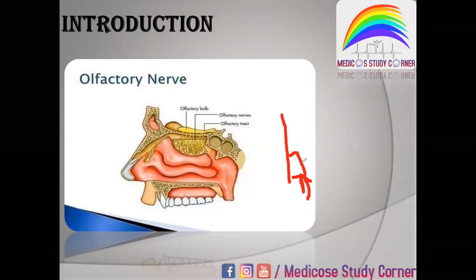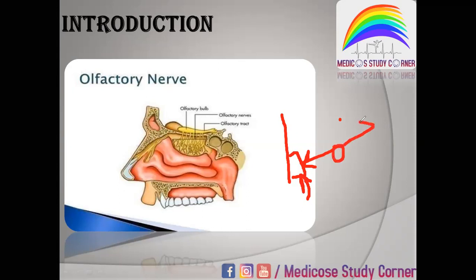One is the central part and one is the peripheral part. Where we start — where we have mucous membranes — there are olfactory receptors scattered. After that, there are different processes. One is the peripheral process, which is attached to the receptor, and one is the central part which goes to the CNS. This is the receptor — the nerve has two processes: one is the peripheral process and one is the central process.